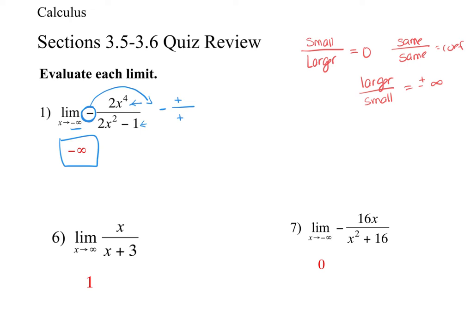For these last two on the bottom here, number six, we have the same degree. So I'm just going to use my coefficients. My coefficients here, one over one, which is how I get the one. And then for this one, I'm approaching negative infinity, but my denominator on the bottom is larger. And so either direction, from negative or positive, this is actually going to be approaching zero.